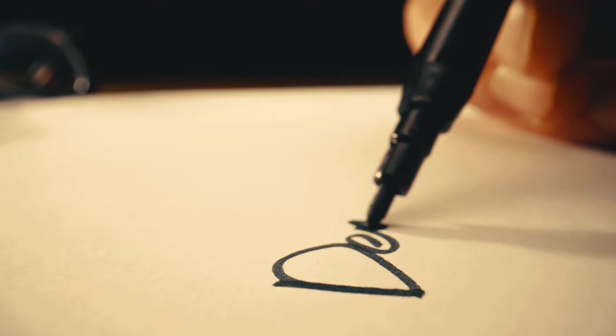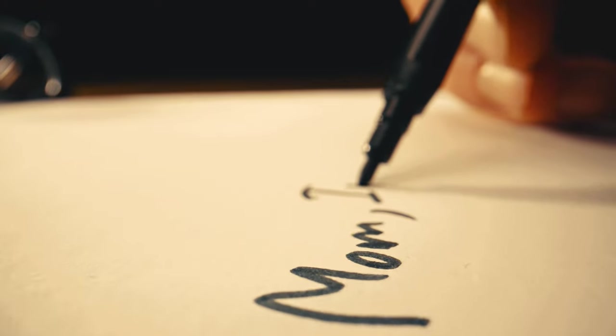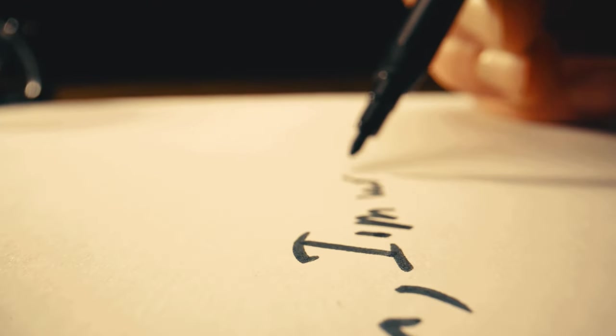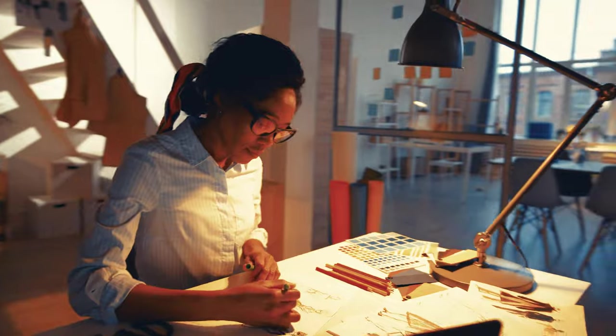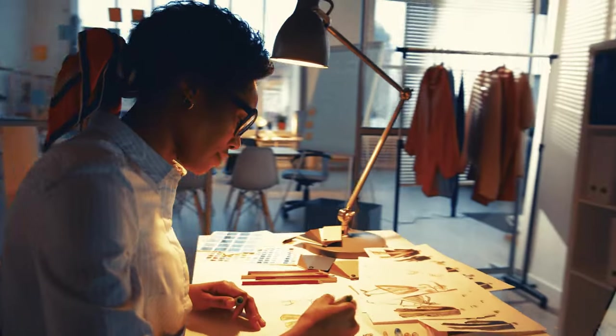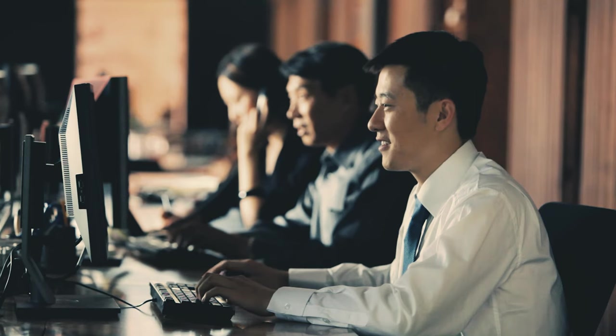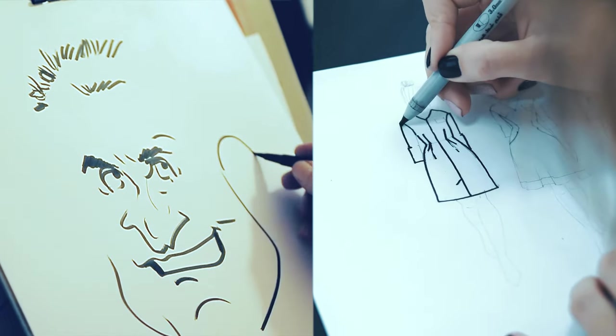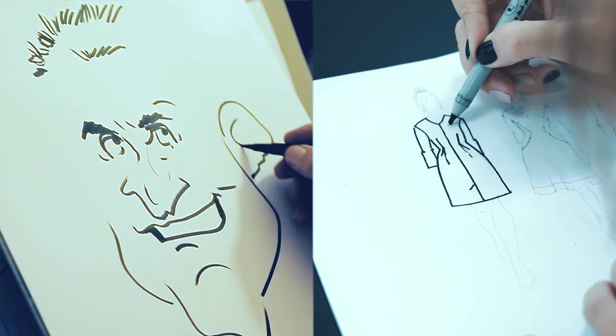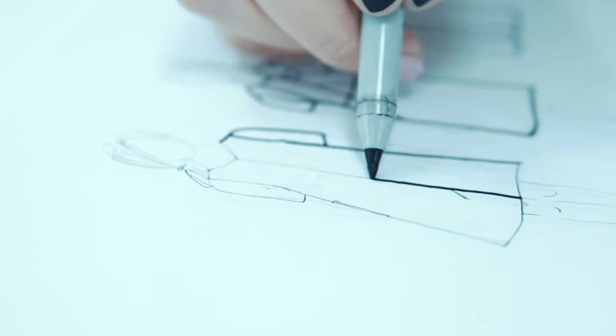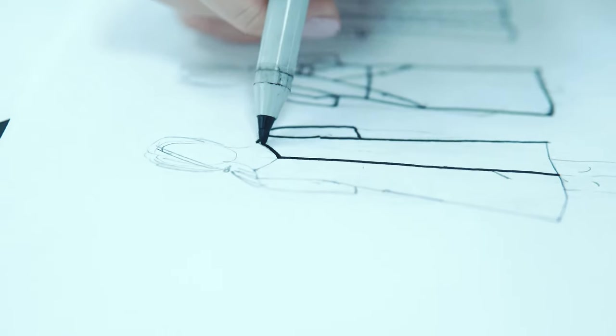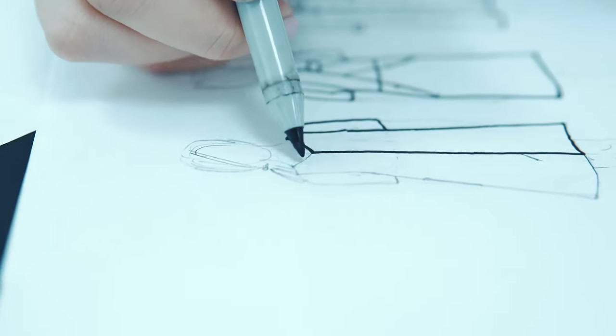One of the key advantages of felt tip pens is their ability to produce bold, opaque lines that stand out on paper. They are also known for their ability to write on a wide range of surfaces, including paper, cardboard, plastic and metal. Overall, felt tip pens have become a beloved and versatile writing instrument used by everyone from students and office workers to artists and designers. They have opened up new creative possibilities for people around the world, and continue to be a popular choice for anyone who wants to add a splash of color and personality to their writing or artwork.